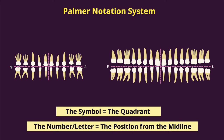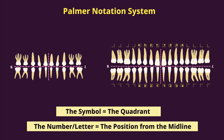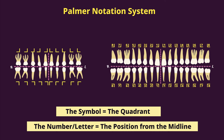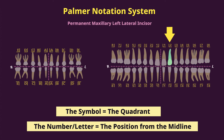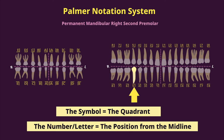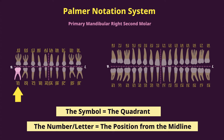Using the Palmer Notation System, a permanent tooth is first assigned a bracket symbol indicating the quadrant it's in, and then a number one through eight indicating the position from the midline. A primary tooth is assigned a bracket symbol to indicate the quadrant, and then a letter A through E. So instead of writing 'permanent maxillary left lateral incisor,' you write this symbol and the number two. Instead of writing 'permanent mandibular right second premolar,' you write this symbol and the number five. And for the primary mandibular right second molar, you write this symbol and the letter E.